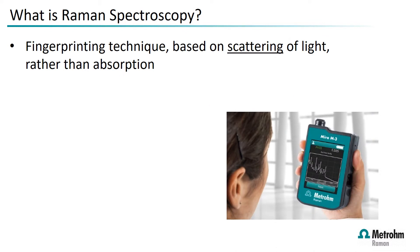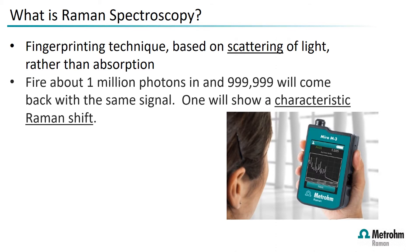So what is Raman spectroscopy? It is a fingerprinting technique based on scattering of light, as opposed to a technique such as infrared FTIR, which is based on absorption. We use a high-intensity laser at a single wavelength and fire light into the sample.